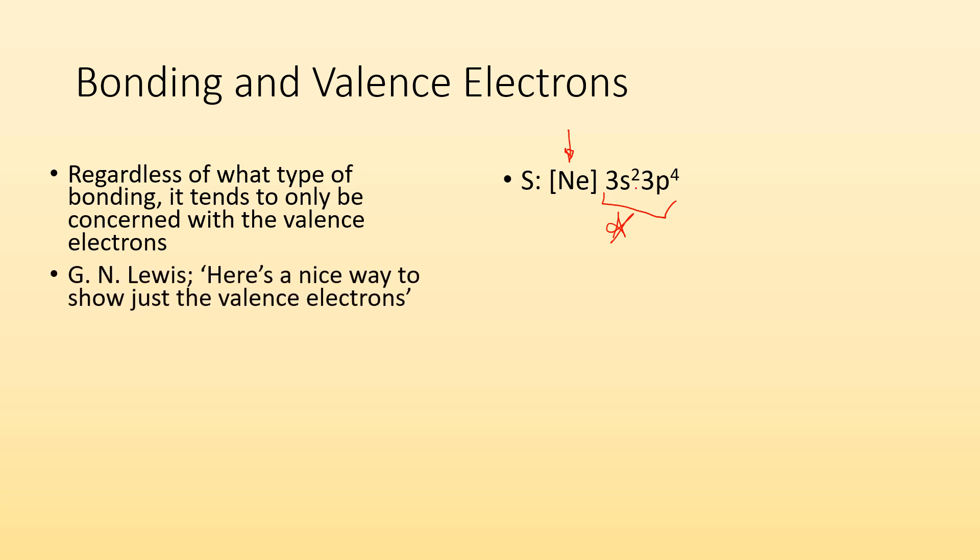So this guy, Lewis, came around and he was like, well, you know, here's a nice way to show just the valence electrons. If we're concerned with just the valence electrons, let's come up with a simpler way. So you start with the chemical symbol. So for sulfur, symbol is S. Easy enough so far.